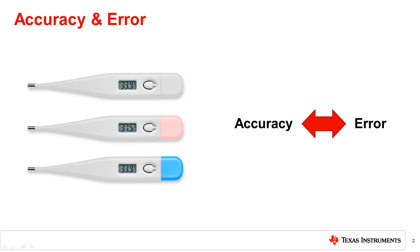As an example, the three thermometers shown are used to measure the temperature of the same source. Two of these thermometers read the same value, while the third reads a different value. So the natural question here is, which one is the accurate reading? Just because two thermometers read the same temperature does not necessarily make its reading accurate. We will come back to answering this question once we understand what accuracy and repeatability are.